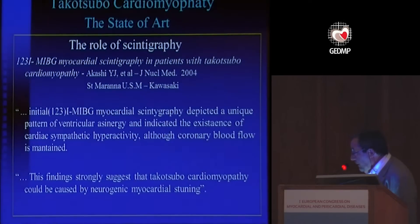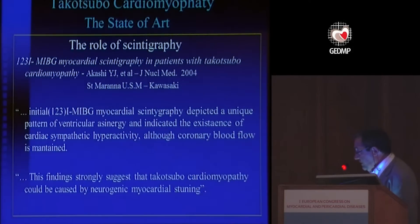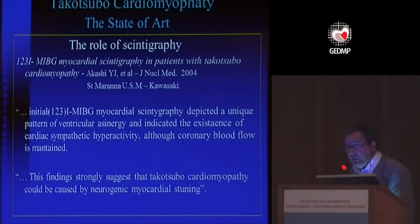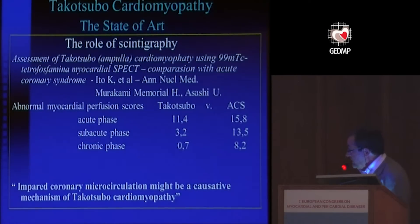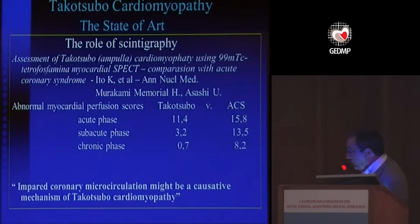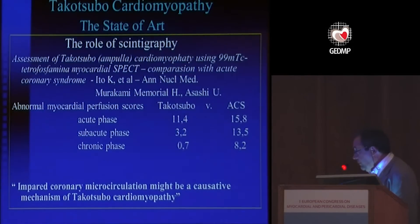The role of scintigraphy led authors to conclude that findings strongly suggest that takotsubo cardiomyopathy could be caused by neurogenic myocardial stunning. Another scintigraphy paper showed differences in perfusion scores between takotsubo and acute coronary syndromes in the acute, subacute, and chronic phases, concluding that impaired coronary microcirculation may be a causative mechanism of takotsubo cardiomyopathy.